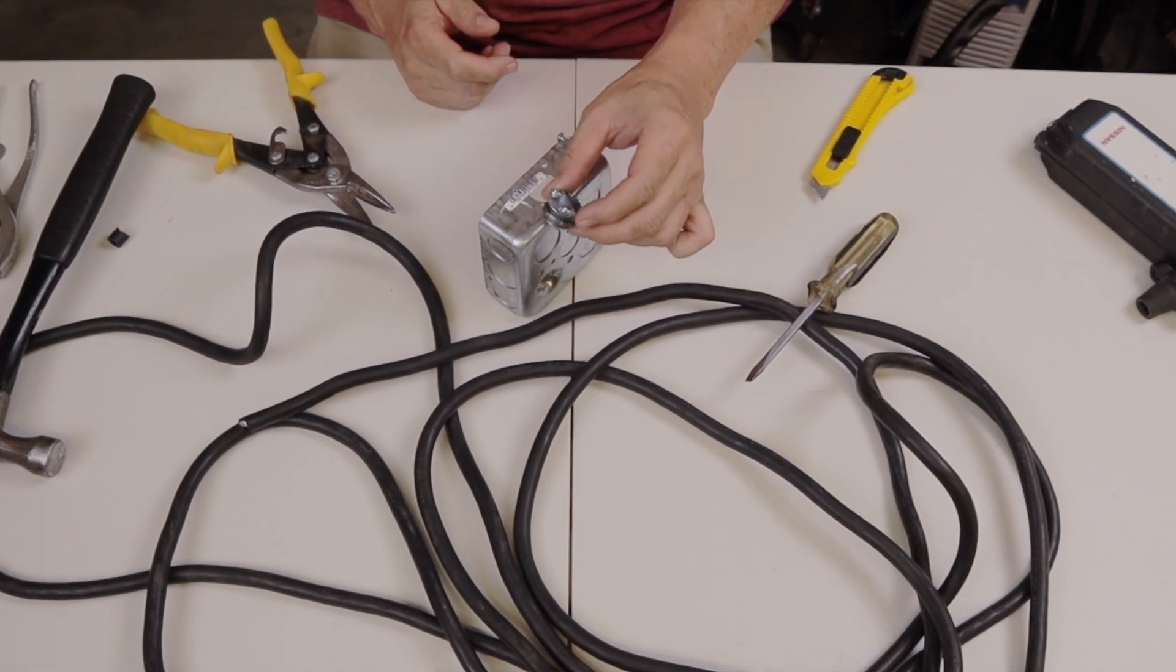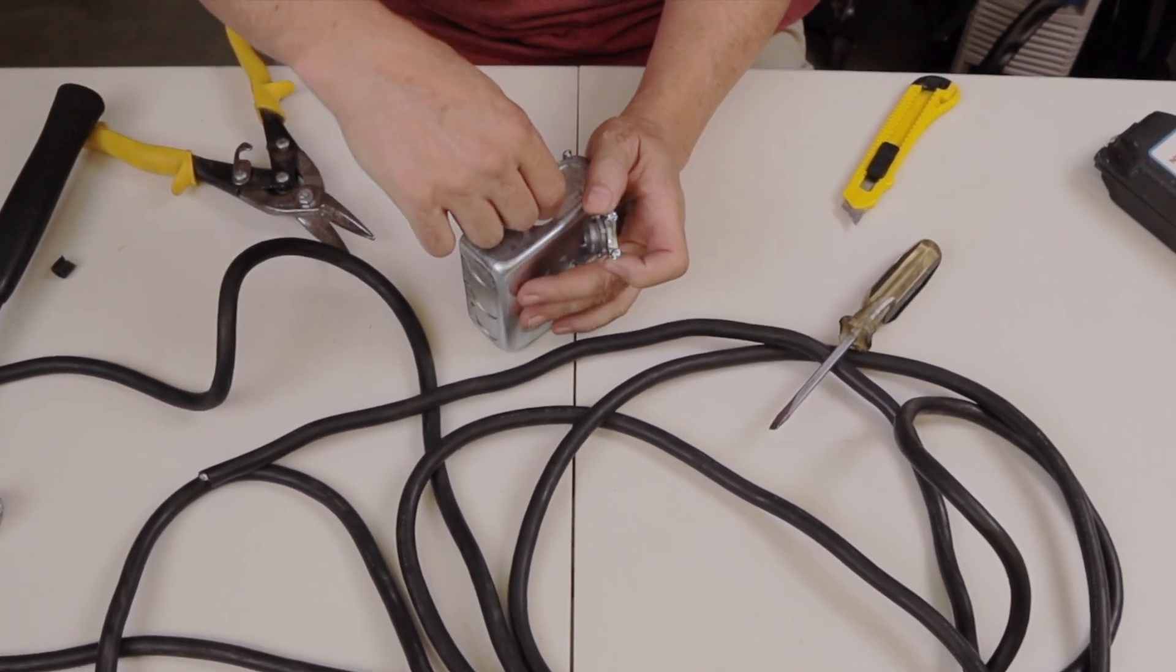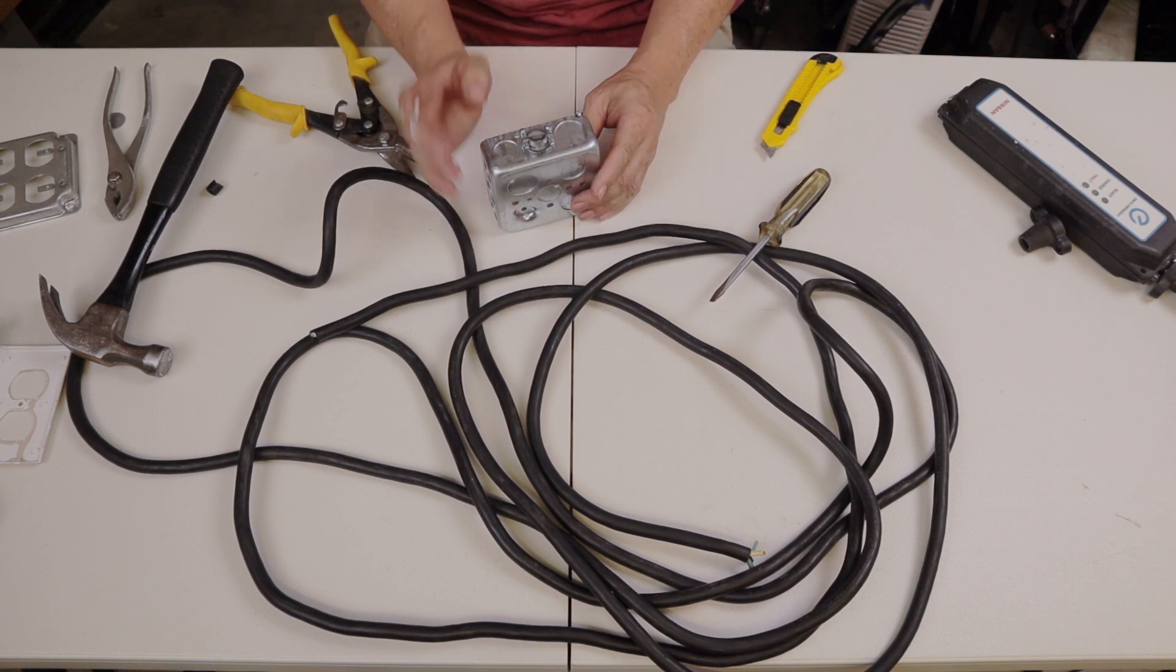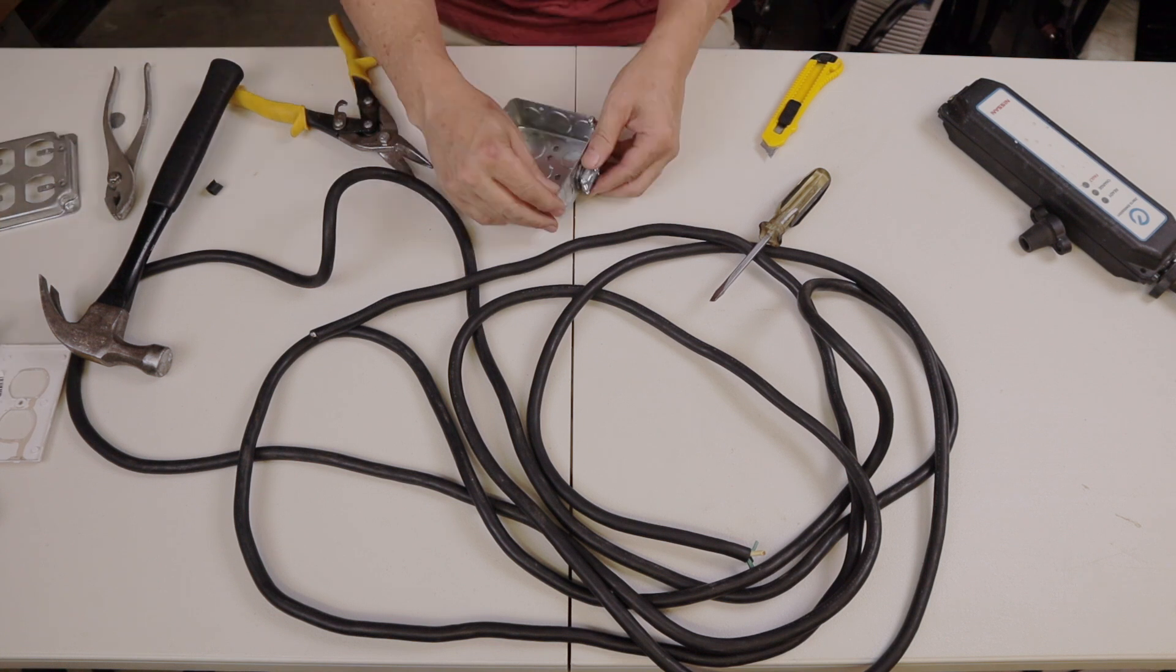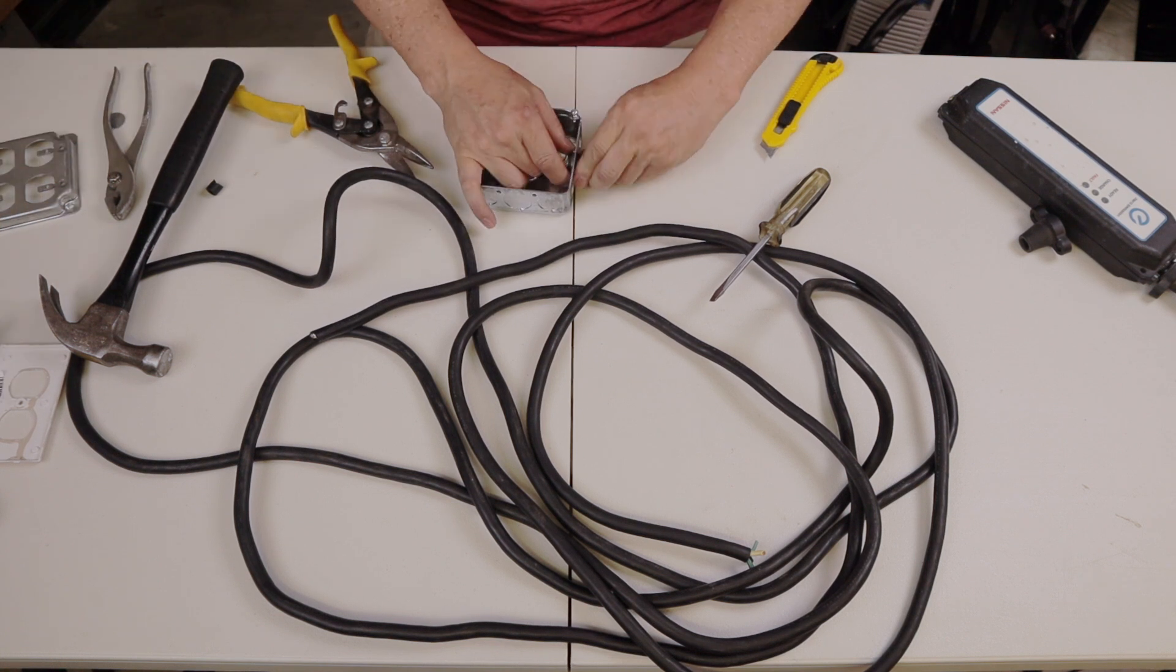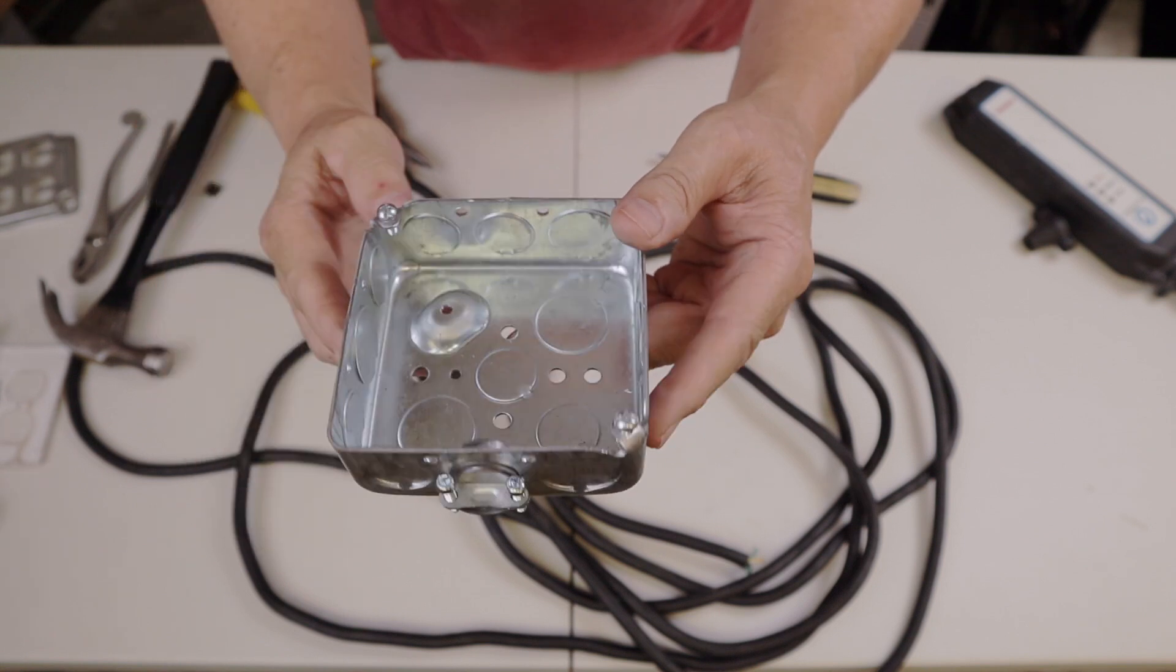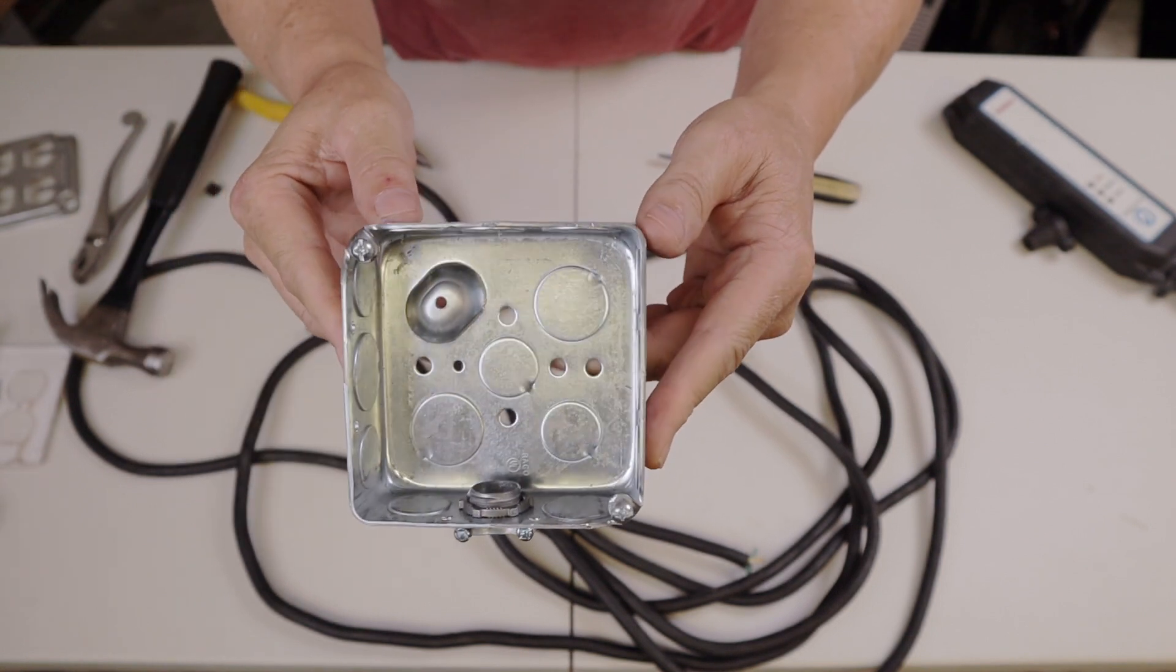And then I've got a strain relief here that I'm going to install in that area. And this will clamp down on the incoming wire, keep it from pulling on the connections inside. And that's where my wire will come into the workbox or the quad box extension cord.